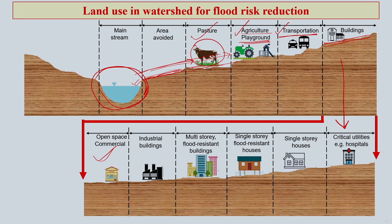Commercial type buildings should be created in open space, then we can have industrial buildings — these should be furthest from the mainstream. After industrial buildings, we can have multi-story flood-resistant buildings, which could be flats for people to reside or office space. Multi-story flood-resistant buildings go next to the industrial buildings.